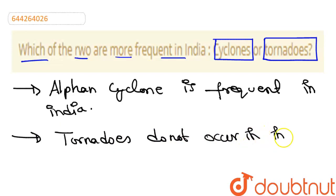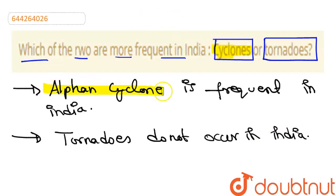So, the answer is cyclones are of higher frequency. That is, cyclones are more frequent in India. So, that is our final answer.